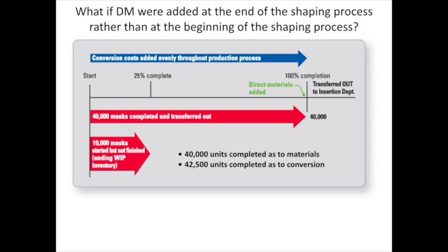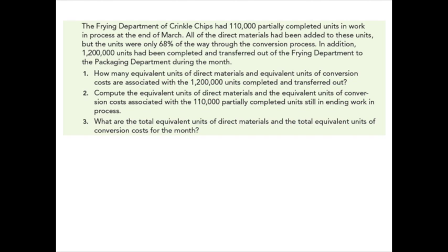Let's look at a quick example. The frying department of Crinkle Chips had 110,000 partially completed units in work in process at the end of March. All of the direct materials had been added to these units, but they were only 68% through the conversion process. In addition, 1.2 million units had been completed and transferred out to the packaging department during the month. We need to find: (1) the equivalent units of direct materials and conversion for the 1.2 million transferred out, (2) equivalent units for the 110,000 still in ending work in process, and (3) total equivalent units for both categories for the month.